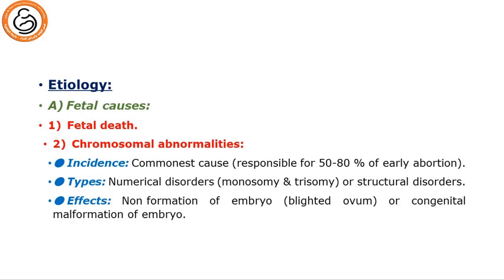For etiology, we have fetal causes like fetal death. Second is chromosomal abnormalities, which account for about 50 to 80 percent of cases of early abortion. Many types exist, the most important being numerical disorder: monosomy and trisomy, or polyploidy disorders. Regarding the effects, there is non-formation of the embryo, which is called blighted ovum or empty sac, or if continuation of pregnancy occurs, congenital malformation of the embryo will result.